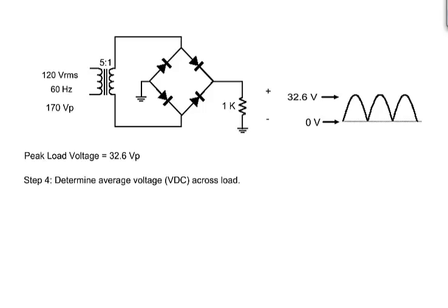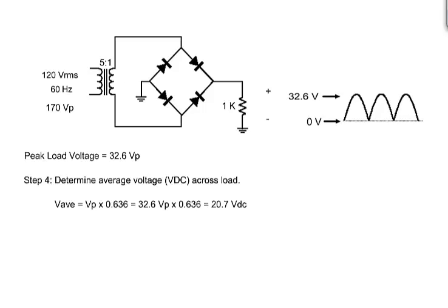But what is the average voltage? For a full wave rectifier, the average voltage, also called the effective voltage, is its peak value times 0.636. In this case, it's 20.7 volts and is the DC voltage.